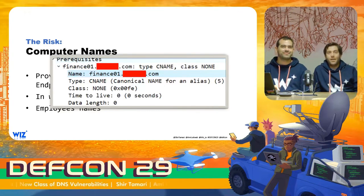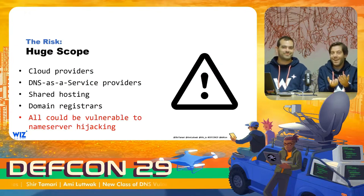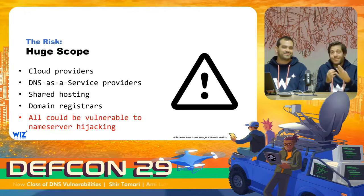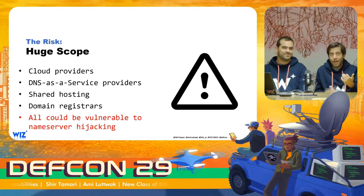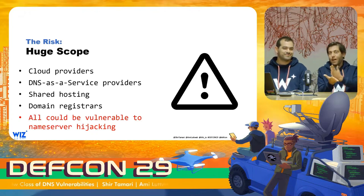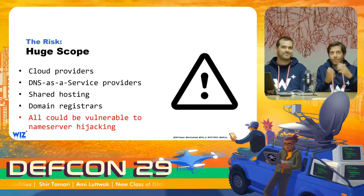Now, just so we understand the scope here, we looked at this specific DNS provider, then we asked — wait, is this only this DNS provider? So we started looking at others, and we soon found there are many others also susceptible to the same vulnerabilities. This is not just a Route 53 vulnerability — this seems to be something shared across most DNS service providers. And we don't have to stop at the cloud providers — you have shared hosting, domain registrars, so many different service providers. The shared concept here is that they provide DNS services for many, many different companies, and there is a chance that many of them are vulnerable to this attack of name server hijacking.